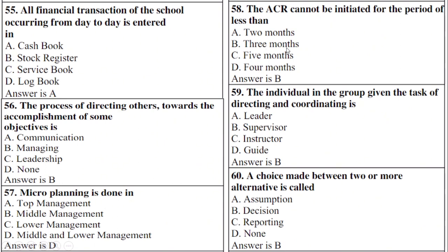Question 59: The individual in the group given the task of directing and coordinating is — right option is B: supervisor. Question 60: A choice made between two or more alternatives is called — right option is B: decision.